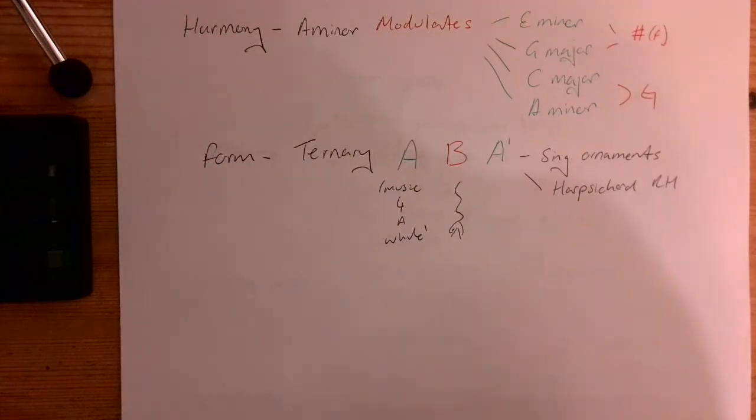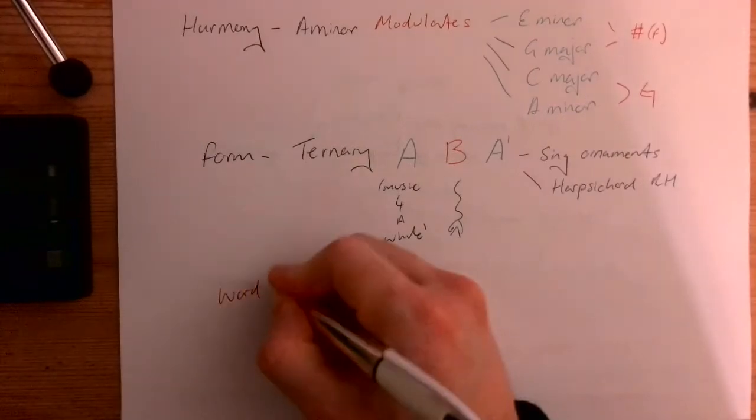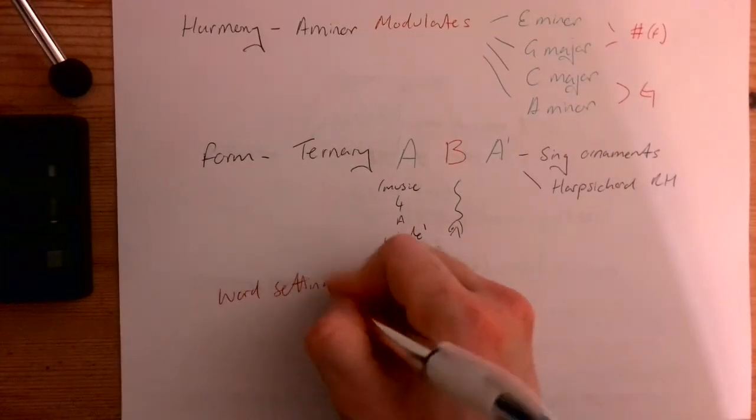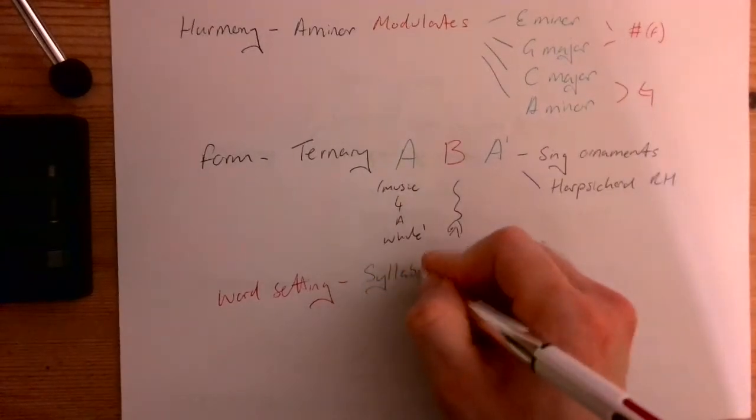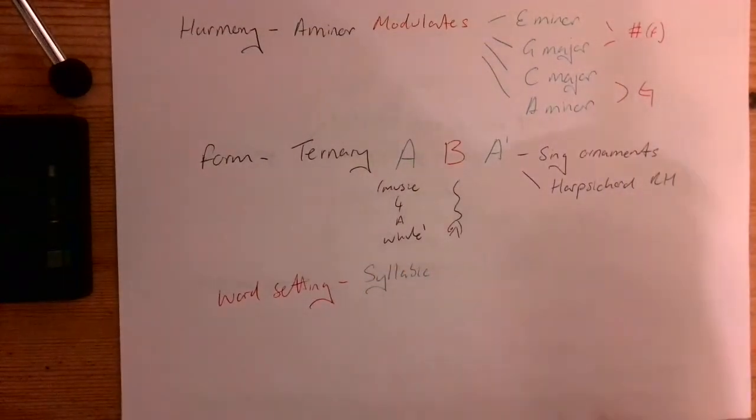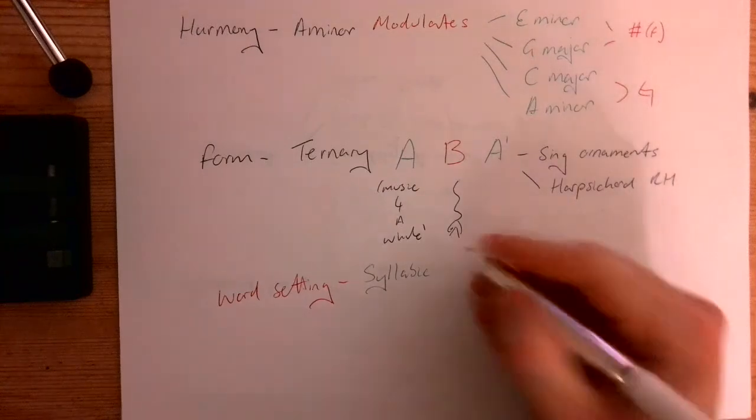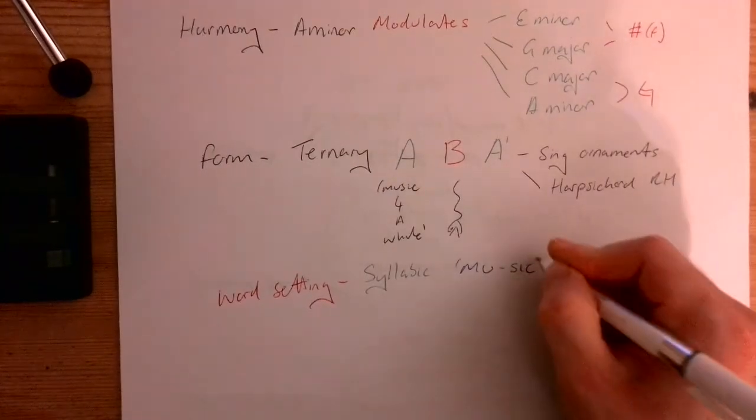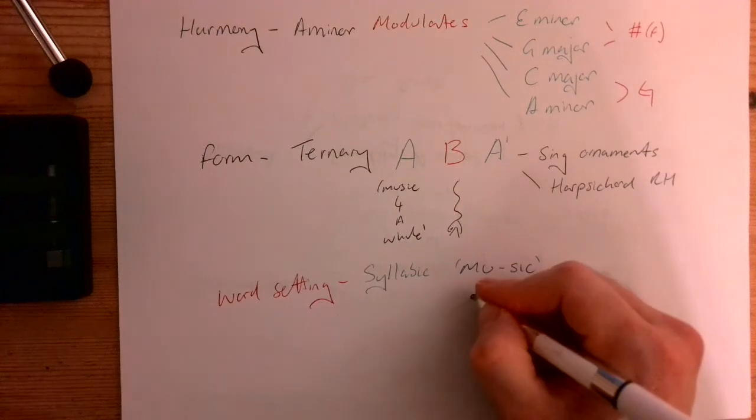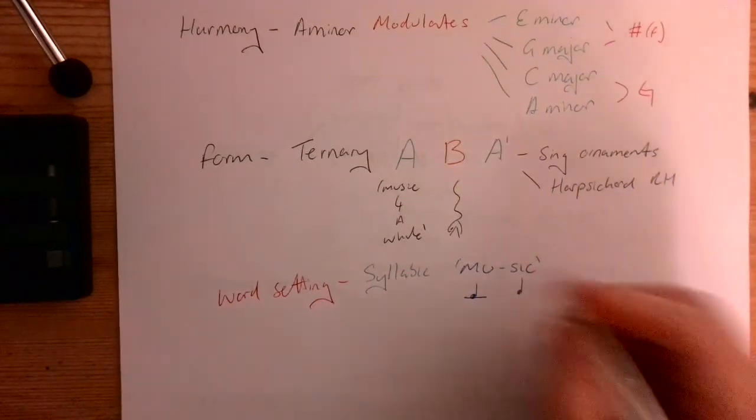A couple of other things we can talk about. Word setting. The word setting in this piece is mostly syllabic, which means that every syllable has its own note. So if we did music, for example, obviously, music has two syllables, so that would be one note for muse and one note for sick, those syllables.